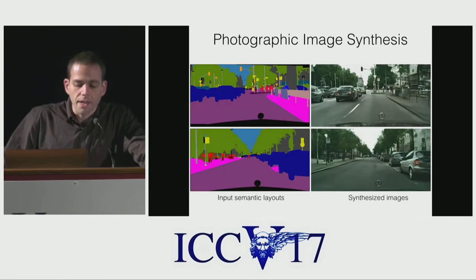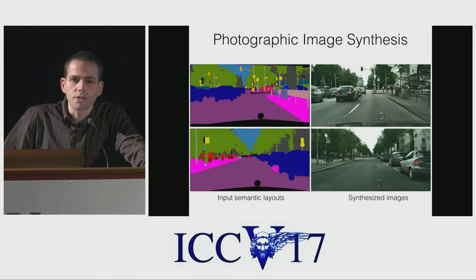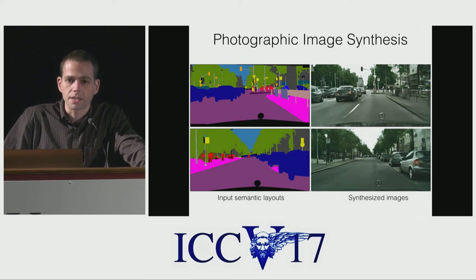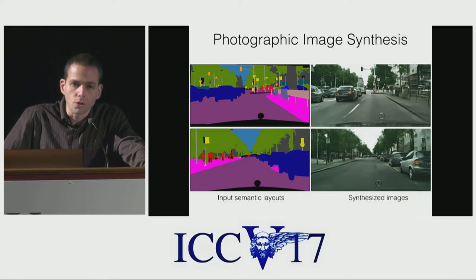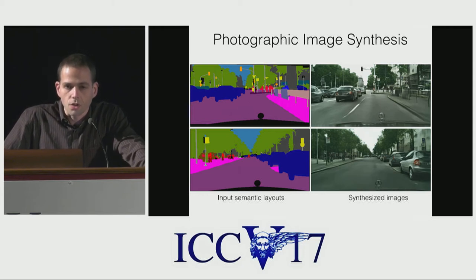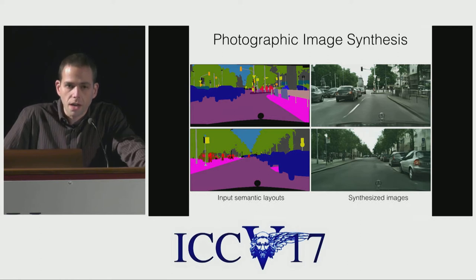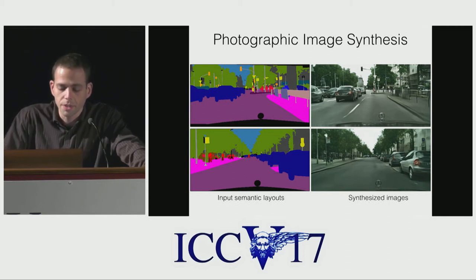Here's what we do. We take a semantic layout as input. The semantic layout specifies the desired semantic class in every pixel. You see these semantic layouts on the left here. The semantic classes are color-coded — car, road, sidewalk, tree, building, street sign, street pole, etc. Our goal is to synthesize a photograph that has the layout specified in the input semantic label map, so there should be a car where the pixels are labeled car, a tree where labeled tree, a building where labeled building, and so forth.